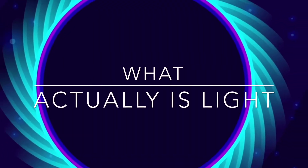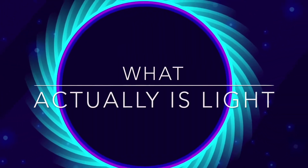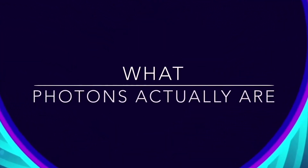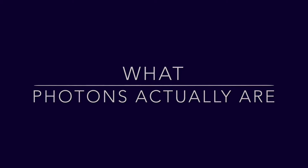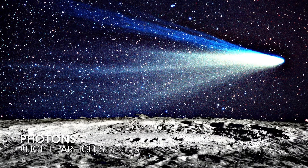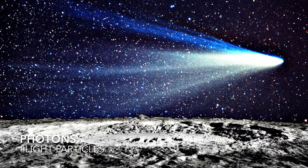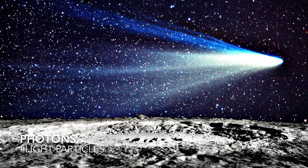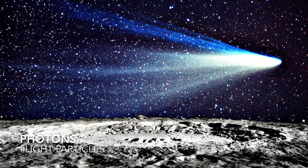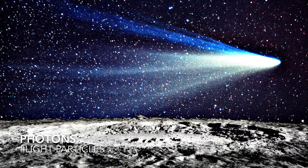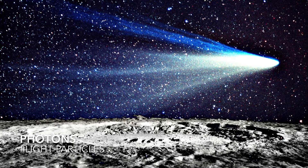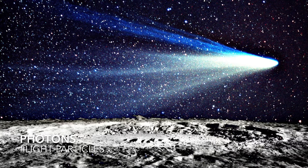Firstly, we have to know what light actually is and what photons actually are, because they are really important to understand this. Light particles — photons — can absolutely pass through glass in the form of a beam, so they are not actually absorbed by it. The reason is that glass doesn't have the substances which could attract them.